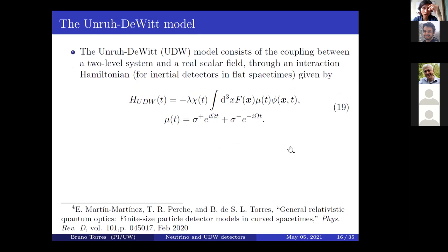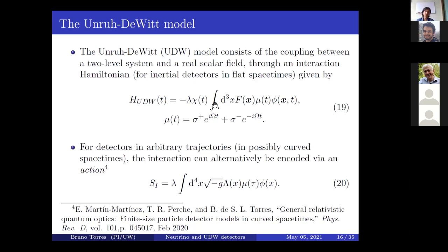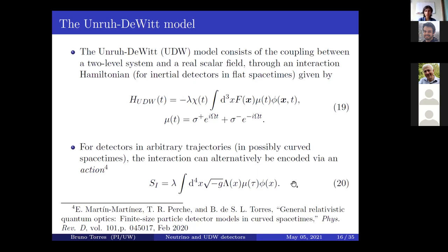The dynamics within certain approximations, considering just one transition, can be approximated by a two-level system coupling to the field with a spatial profile given by a smearing factor. The Unruh-DeWitt model is motivated by approximating that instead of coupling to a vector theory, you couple to a scalar, so the smearing factor becomes a smearing function and you get the monopole moment of the two-level system. This was first written for an inertial detector in flat spacetimes, but can be generalized to any trajectory in curved spacetimes — defined via an action.